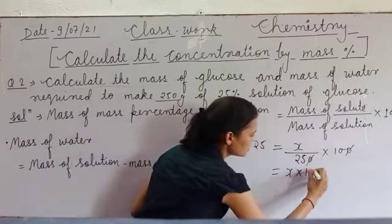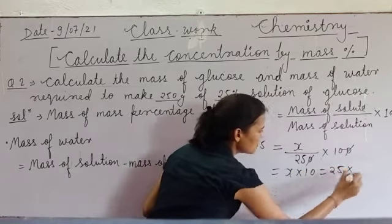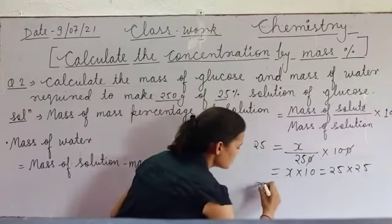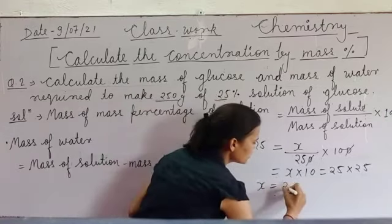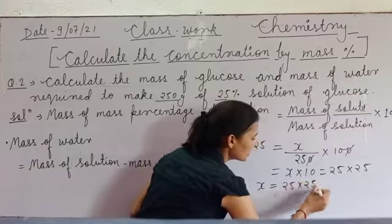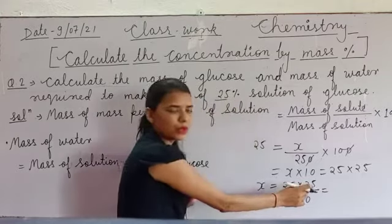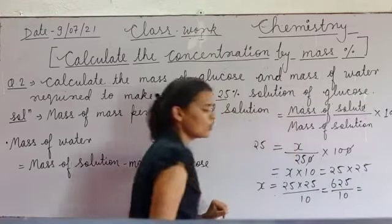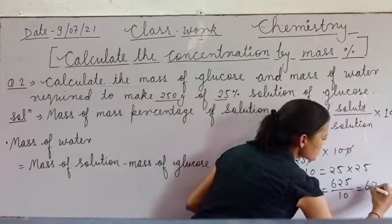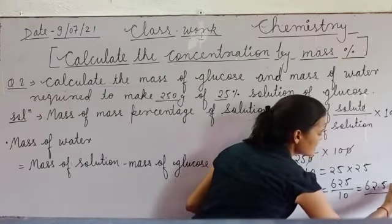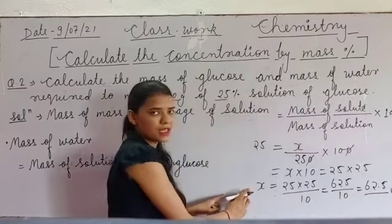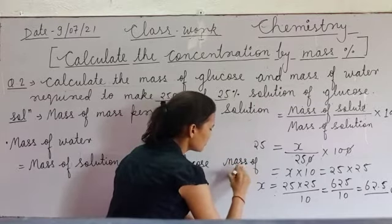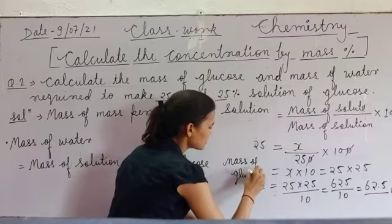Now, x into 10 = 25 into 25. Students, x ko LHS mein lenge, equal to 25 × 25, divided by 10. Solve karne pe hamaara jo answer hoga that is 62.5 gram. So x ki value find ho chuki hai — x hamaara mass of glucose hai.